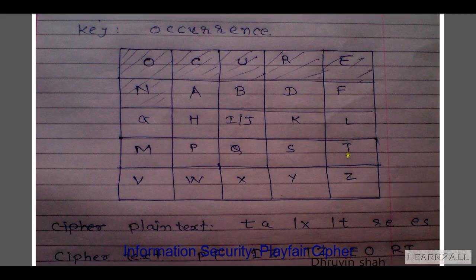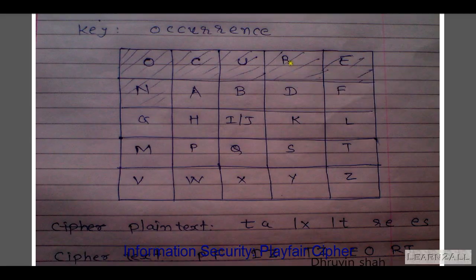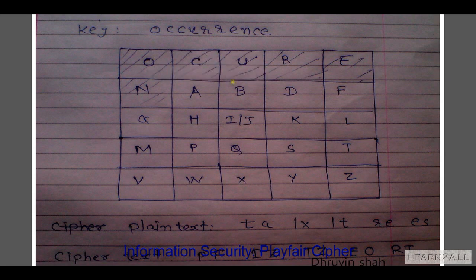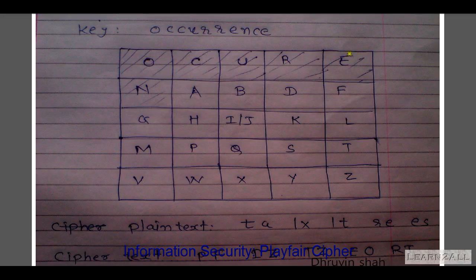Then the pair RE — R and E. Both are in the same row, so we move towards the right. In place of R we write E, and in place of E we write O. And the last pair is ES — E and S. In place of E we write R, and in place of S we write T.